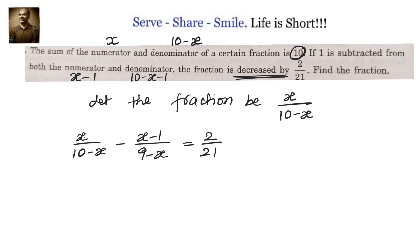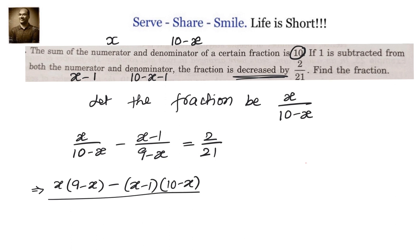Now we have to simplify this and get a quadratic equation, solve it, and get the x value. Taking the LCM, we get: x(9 minus x) minus (x minus 1)(10 minus x), all divided by (10 minus x)(9 minus x), equals 2/21.